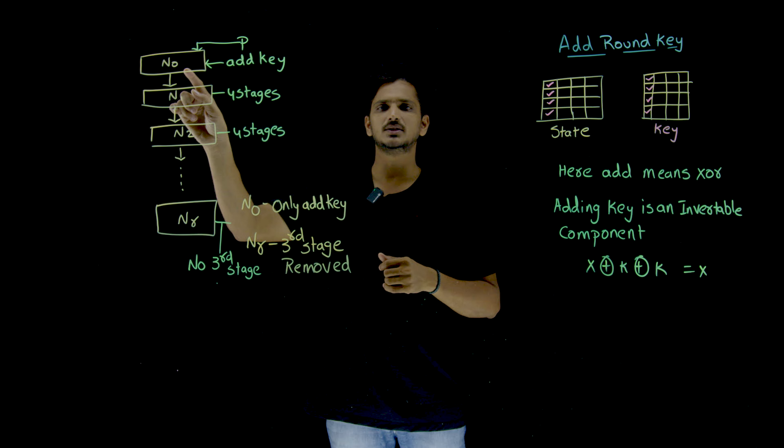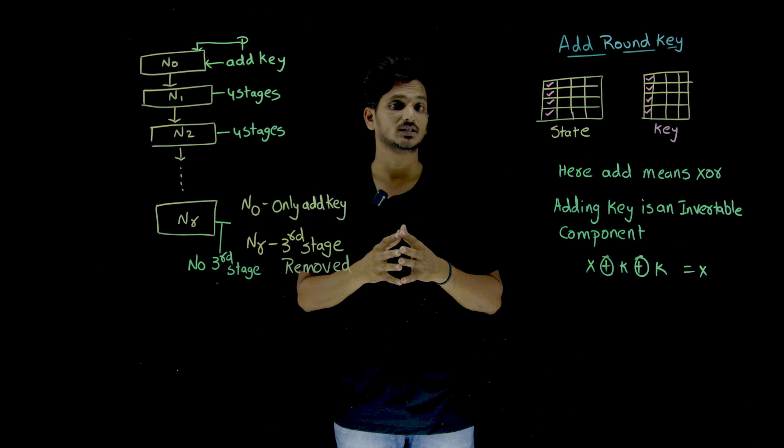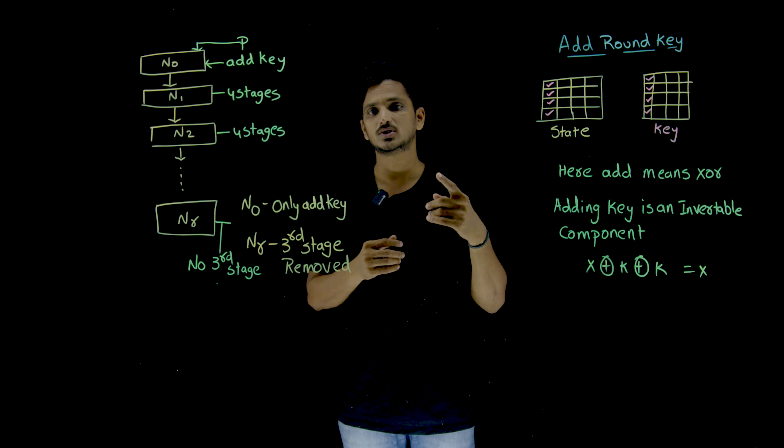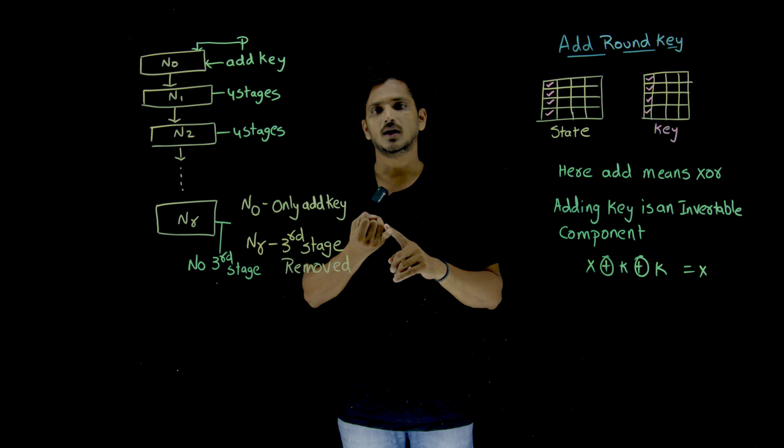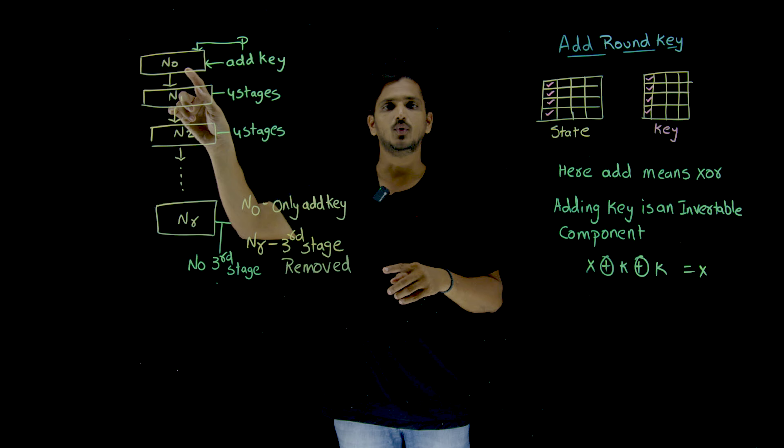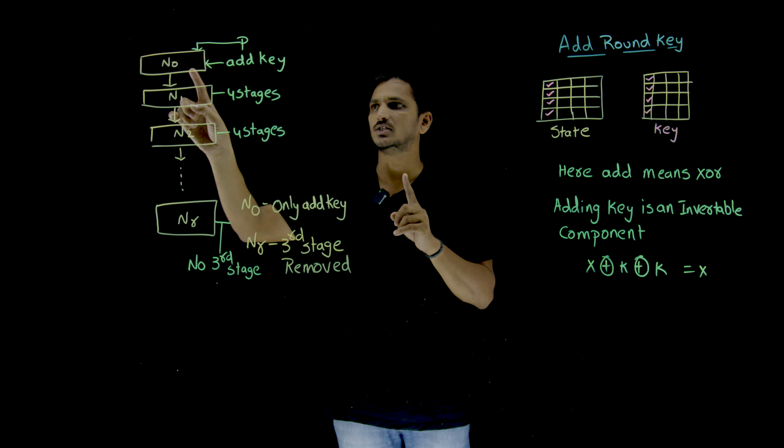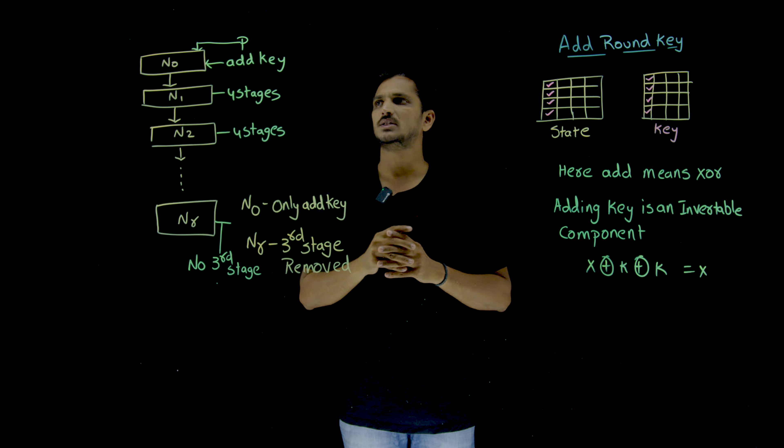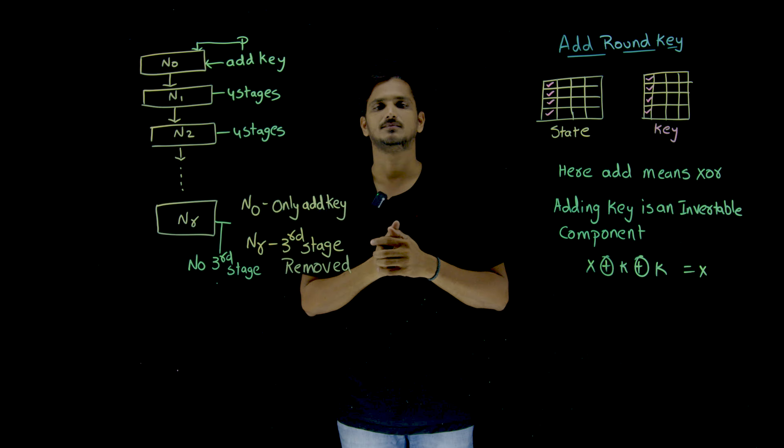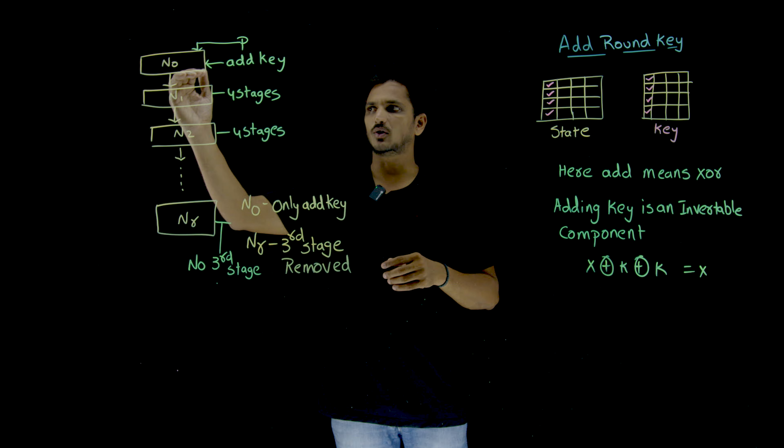So N0 means in the first round? In our previous classes, we discussed that in each round, we are having 4 stages. What are those 4 stages? Substitution byte. And next one is, we are going to do shifting the rows. And the third one is mixing columns, then adding key. But in the first round, N0 round, we don't have all those stages. We are having only one stage, that is adding a key. Means our plain text first go into the N0 round, their key is added. The first key is added.